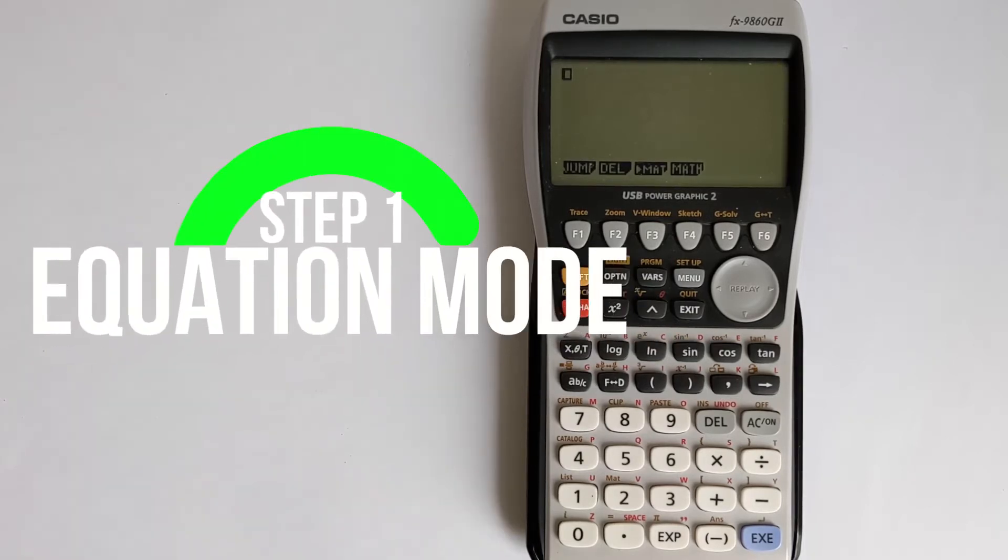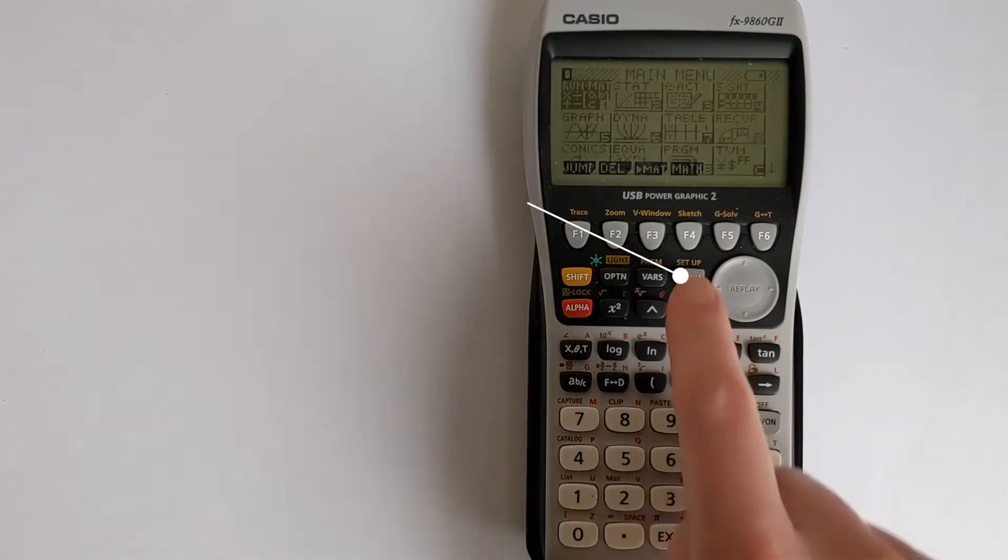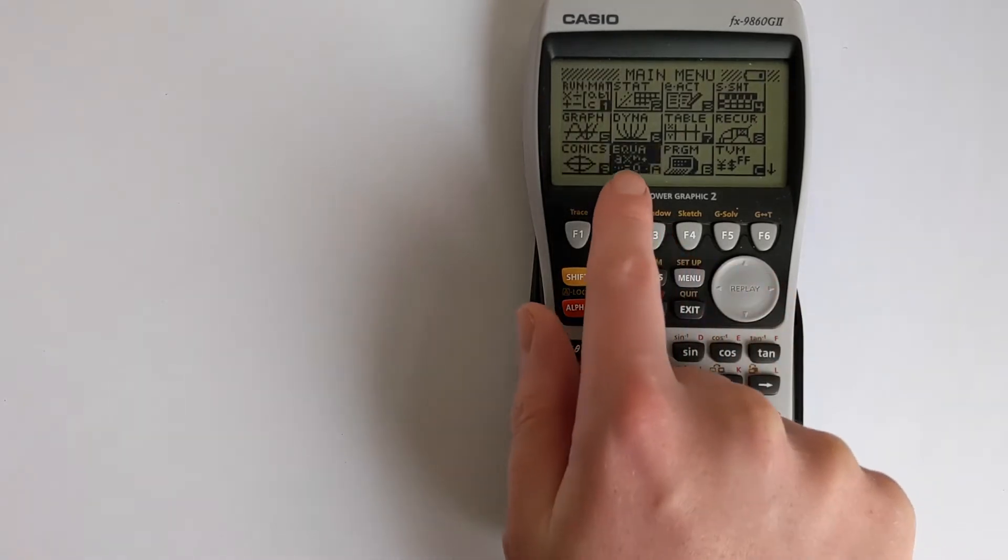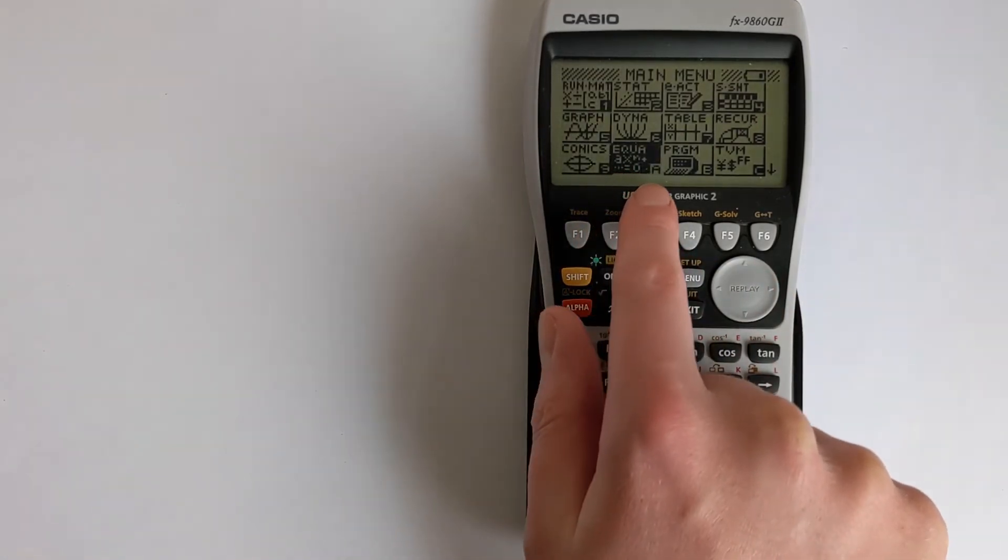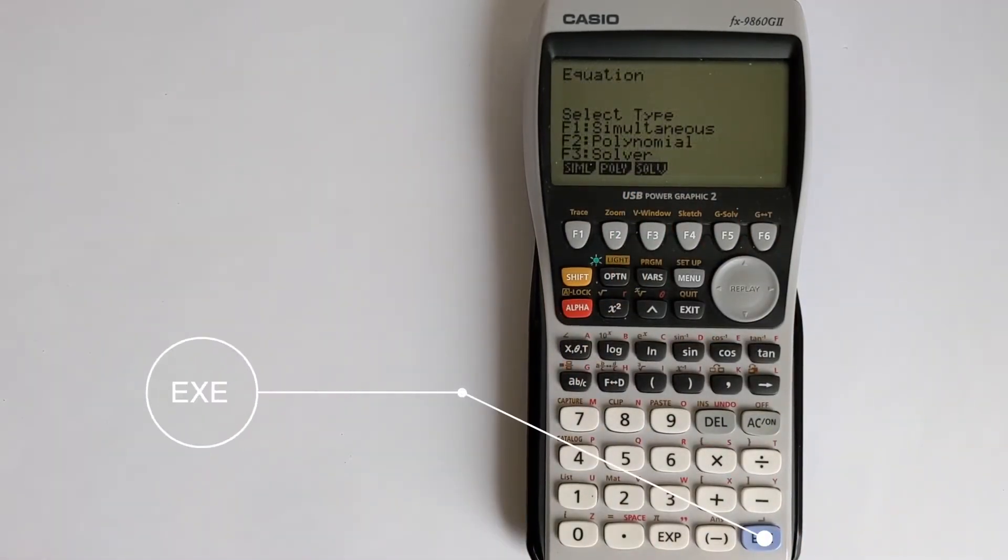The first step to solving this is to put it into the correct mode to access the solvers. We're going to select menu and then navigate down to where it says EQA or option A. Press execute when that is highlighted and this will bring up various solvers.